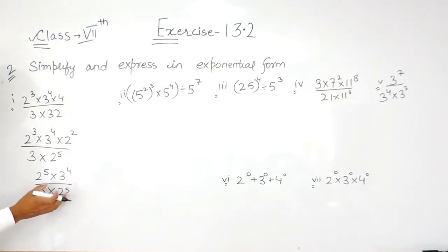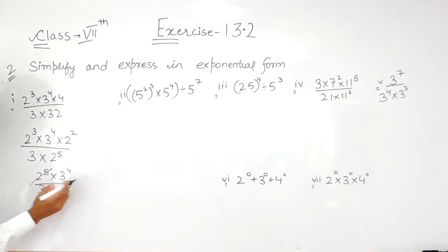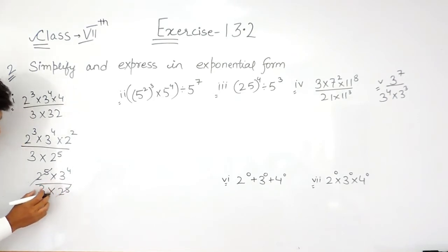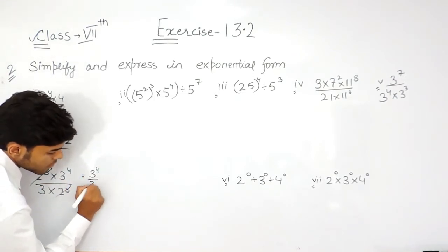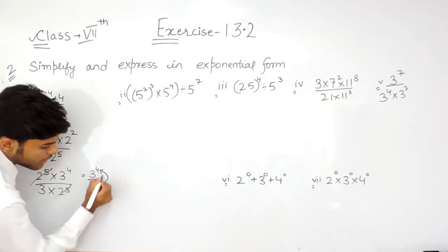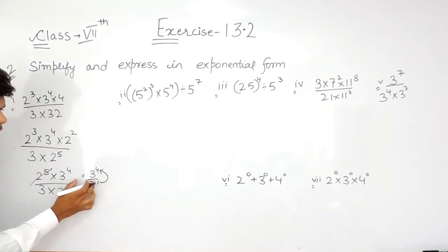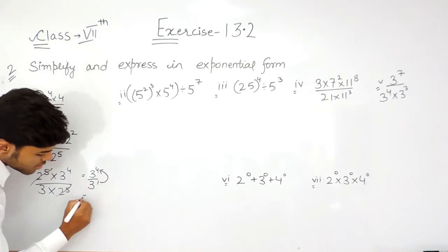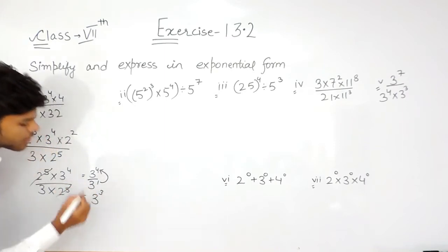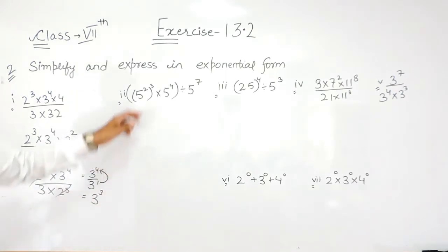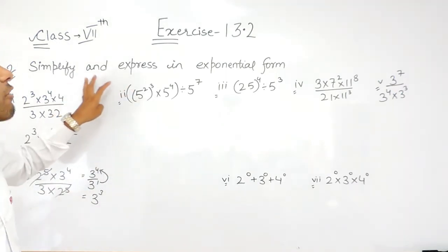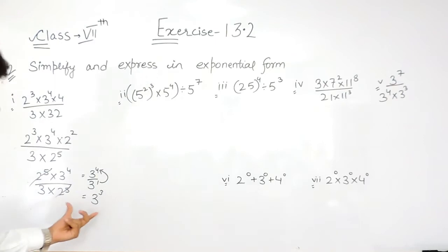Now, these two are the same terms, they can be cancelled out. So we have 3 to the power 4 upon 3 to the power 1. This one will go in the numerator and its sign changes — here it was plus, then it will be minus. So our answer will be 3 to the power 3, or we can say 27. But as the question says we have to express them in exponential form, so our answer will be 3 to the power 3.